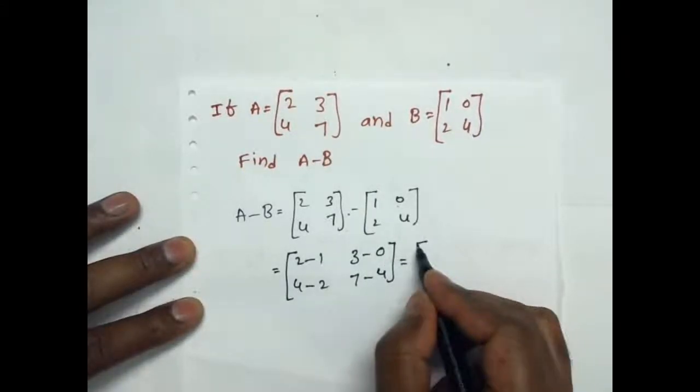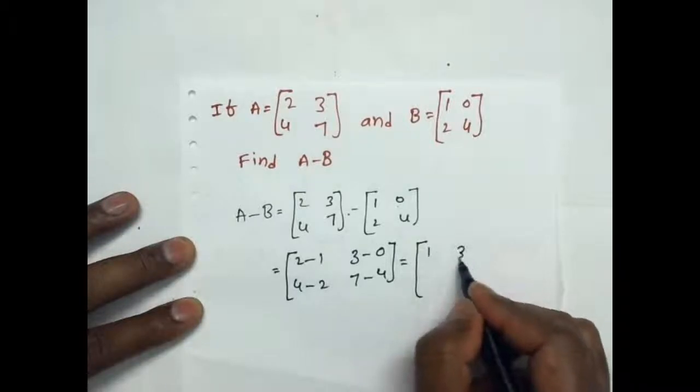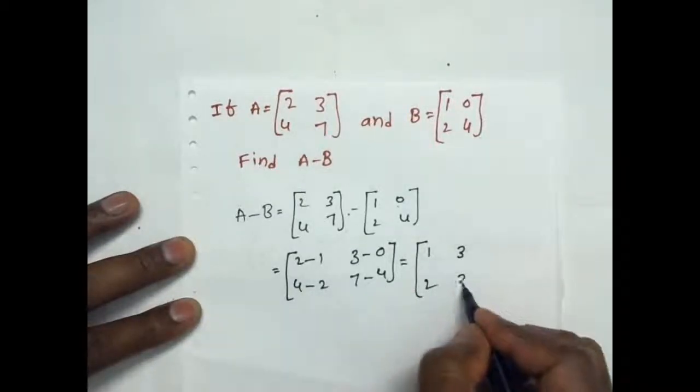That is equal to 2 minus 1 is 1, 3 minus 0 is 3, 4 minus 2 is 2, 7 minus 4 is 3.